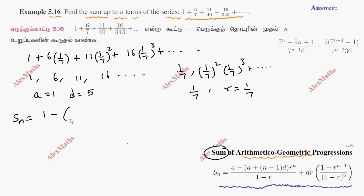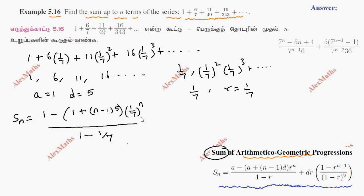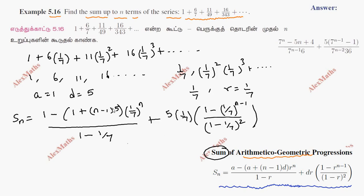We need to substitute the values. Sn equals [1 minus (1 plus (n minus 1) into 5) into (1 by 7)^n] divided by (1 minus 1 by 7), plus 5 times (1 by 7) times [1 minus (1 by 7)^(n-1)] divided by (1 minus 1 by 7) squared. Here a equals 1, d equals 5, and r equals 1 by 7.